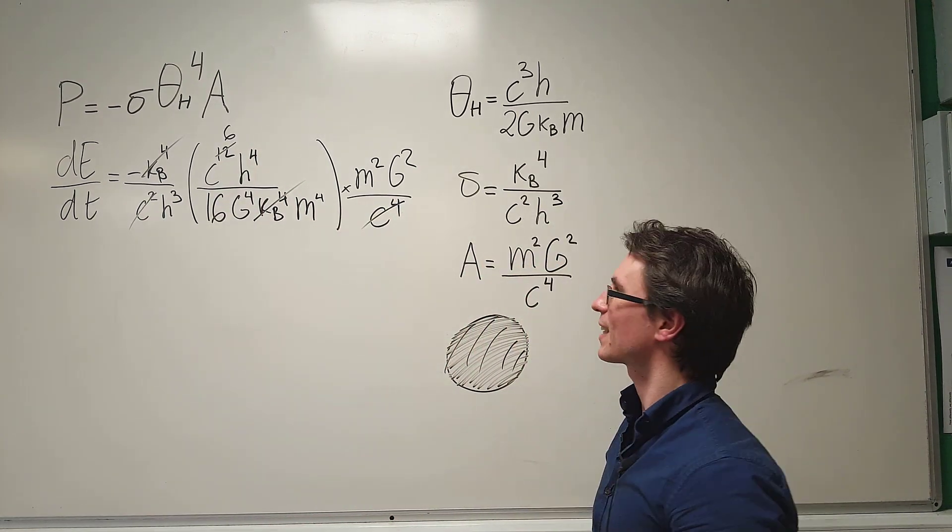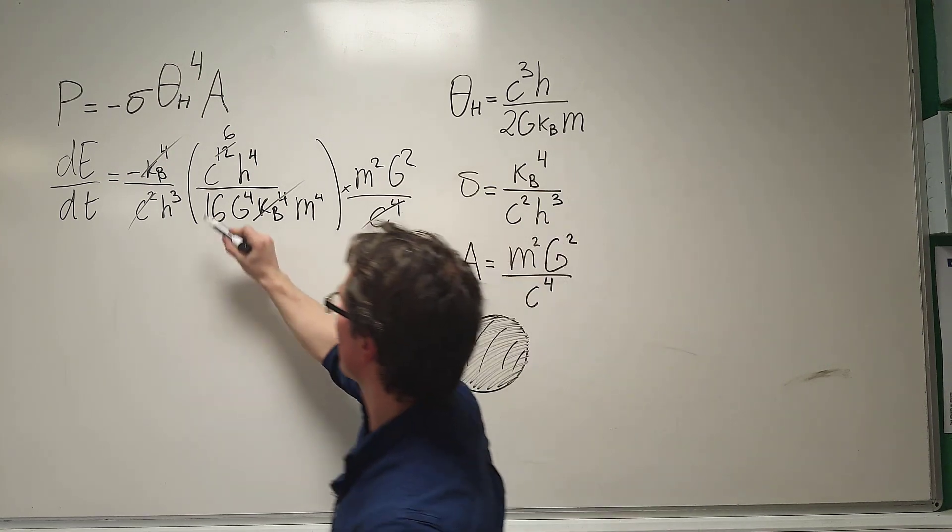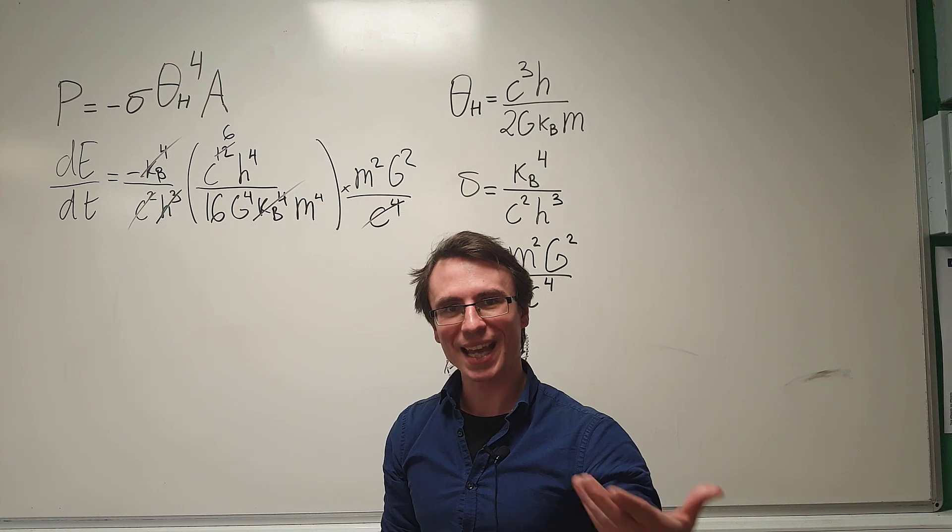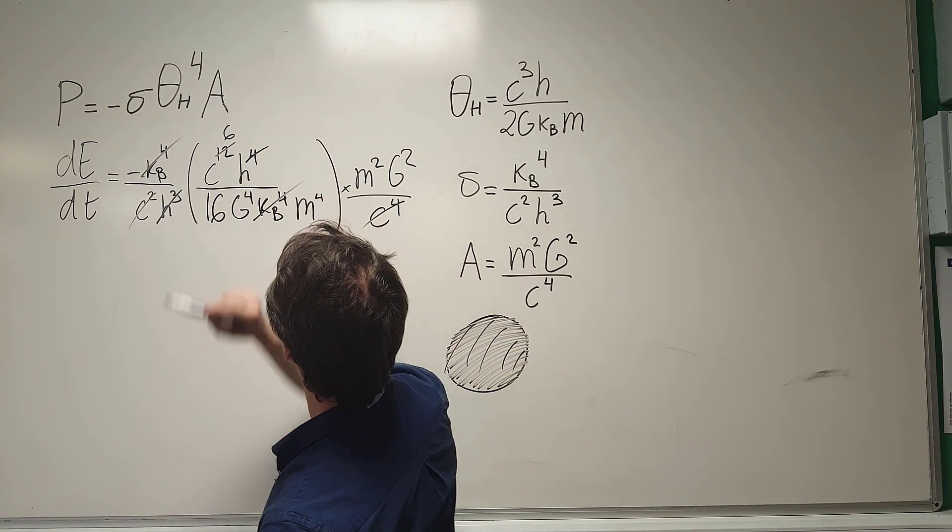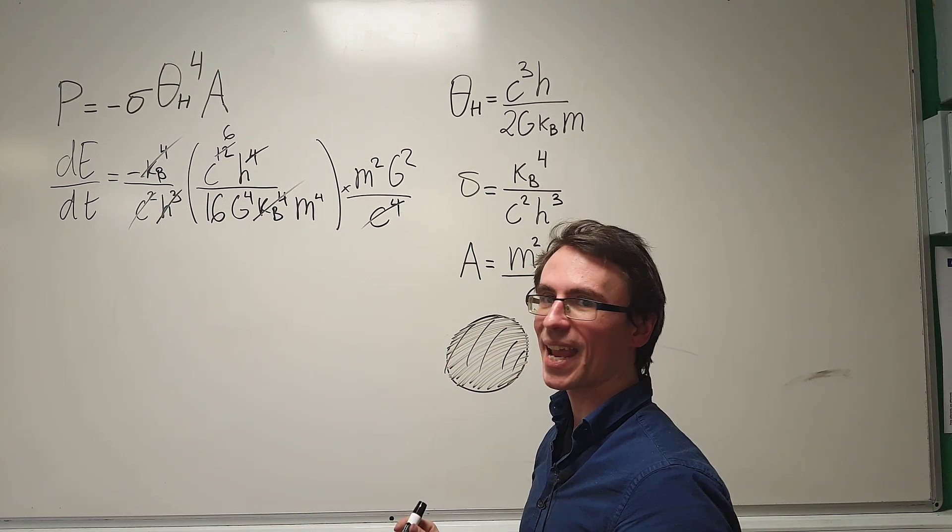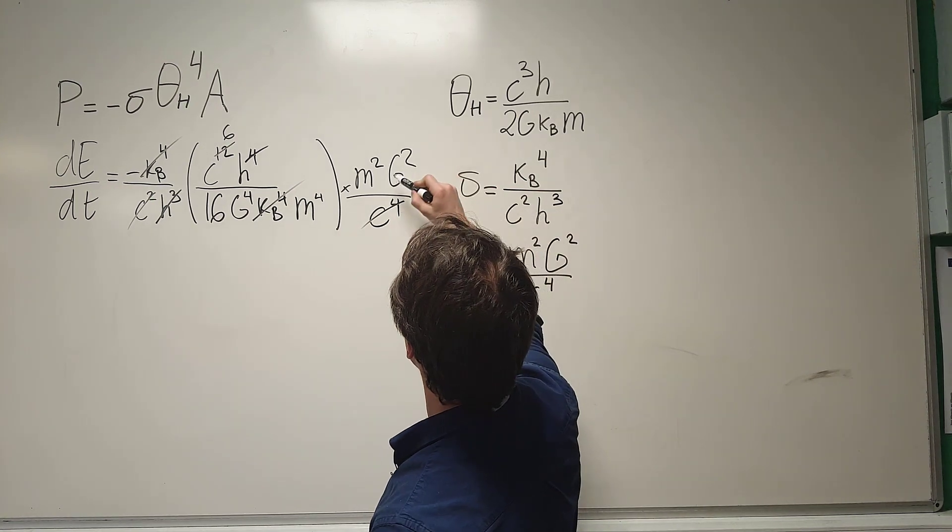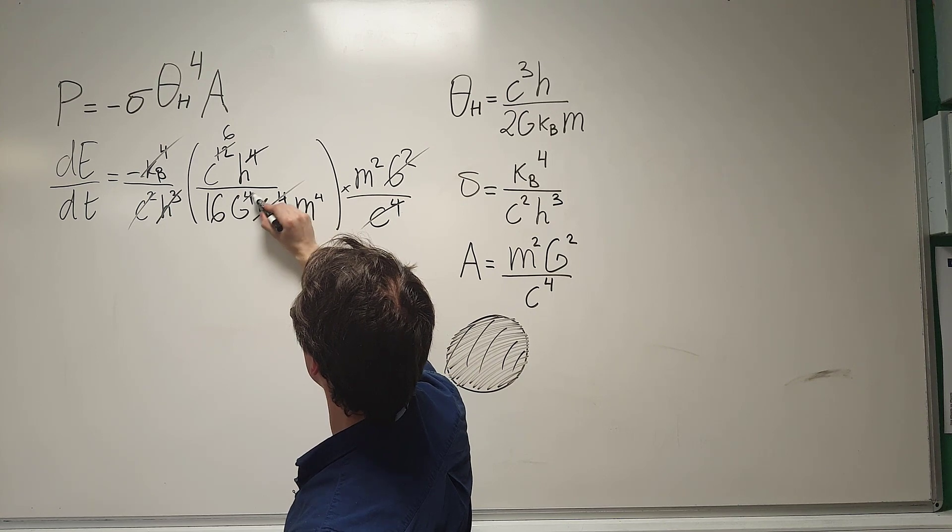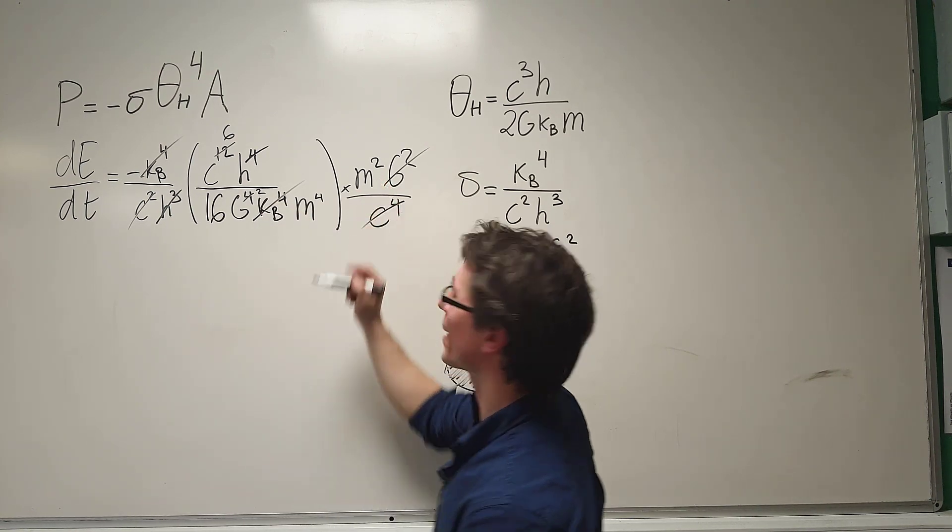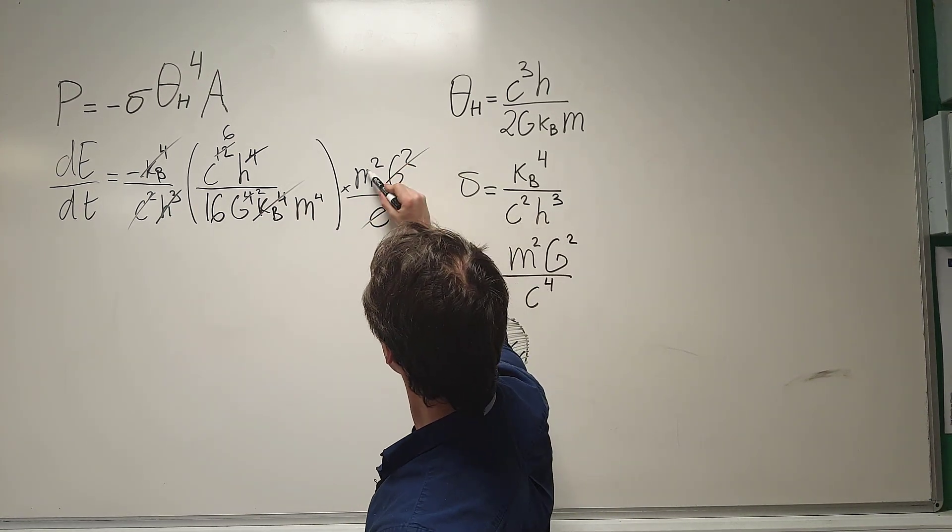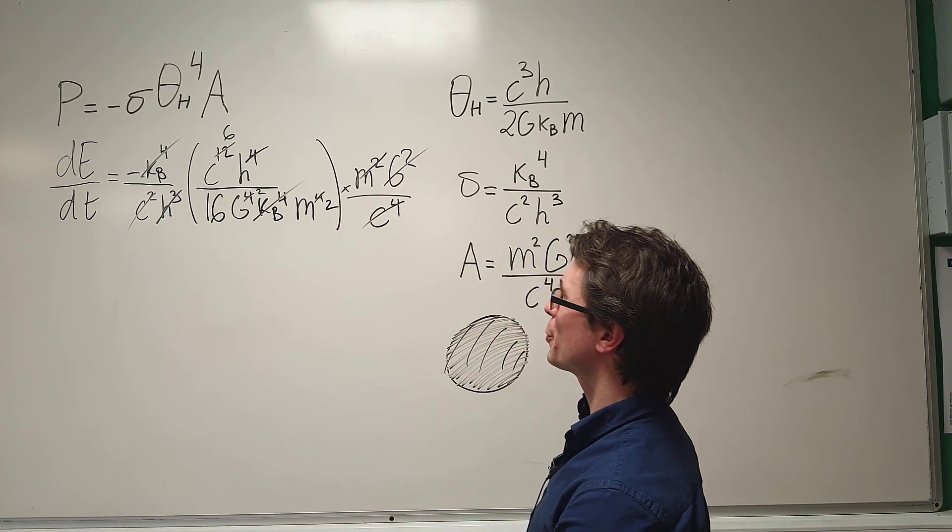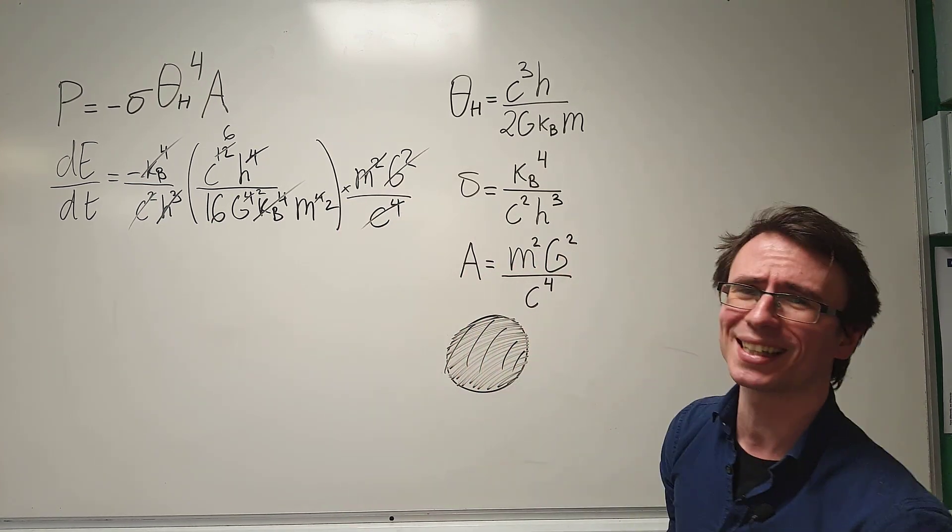Now, we have H cubed, and this means that we can cancel out this term here, which is just going to leave us an H. We have a factor of G squared here, which will leave a G squared here. We have M squared, which we can cancel. That's going to leave us a power of 2. We've done so much cancellations.